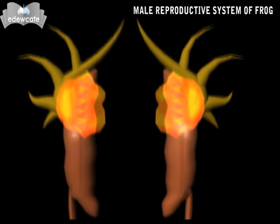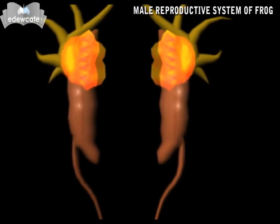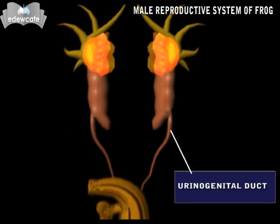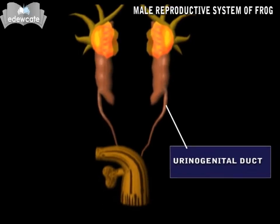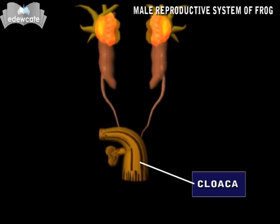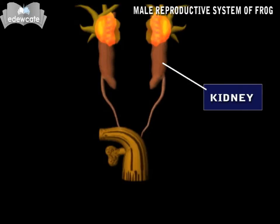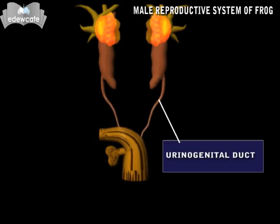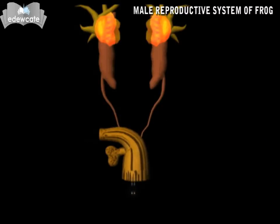From each kidney arises a ureter. The two ureter ducts run posteriorly and open into a chamber called the cloaca. From the kidneys, spermatozoa enter the cloaca through the ureters. The ureters in the male frog are called urinogenital ducts. The urinogenital duct is common for the passage of both urine and spermatozoa.